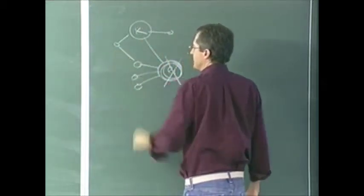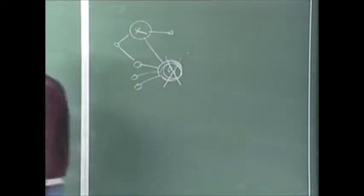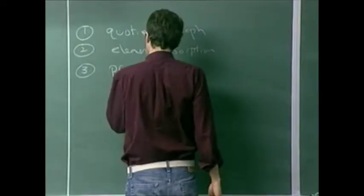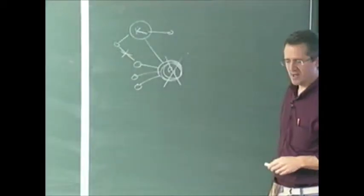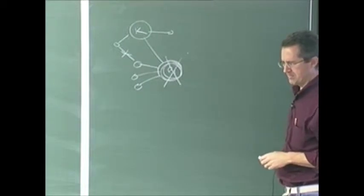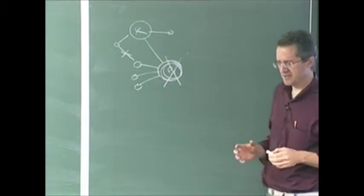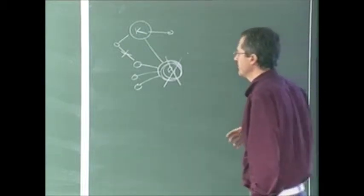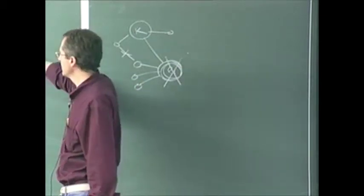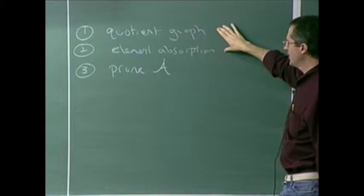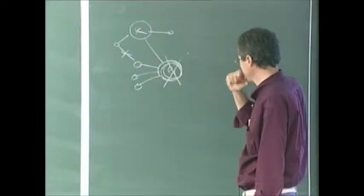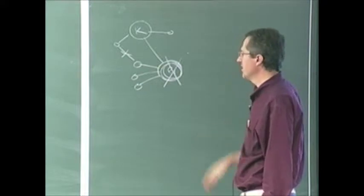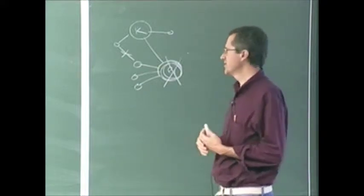The other thing that happens is pruning edges out of the A matrix — I use calligraphic letters to denote the pattern. Pruning this edge is important as well; it also trims up the space. The quotient graph with element absorption is sufficient to make the algorithm work in place. The pruning of A is not strictly required but is appropriate to do at this point.